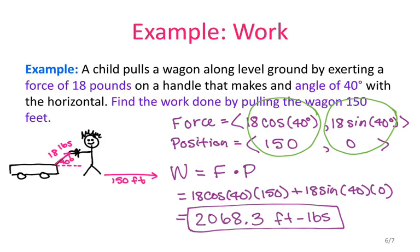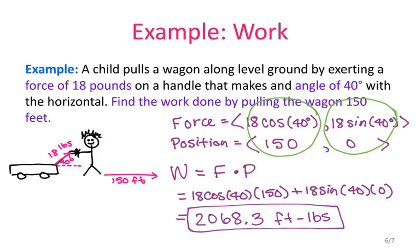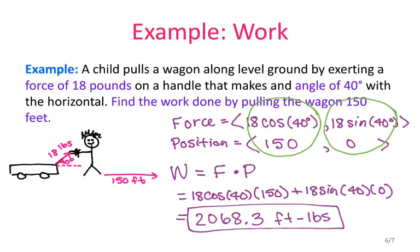So for this scenario, our child was on level ground. Now let's look at a scenario where the child and the handle are both at an incline. So a child pulls a wagon along, wait, that's the same problem. Whoops. Maybe I don't have the other problem. I don't. Well, I guess that's it. I guess that's the end of my video going over section 6.4 because I don't actually have the other scenario in which everything's at an incline. So forget that I even mentioned that. All right. Adios.